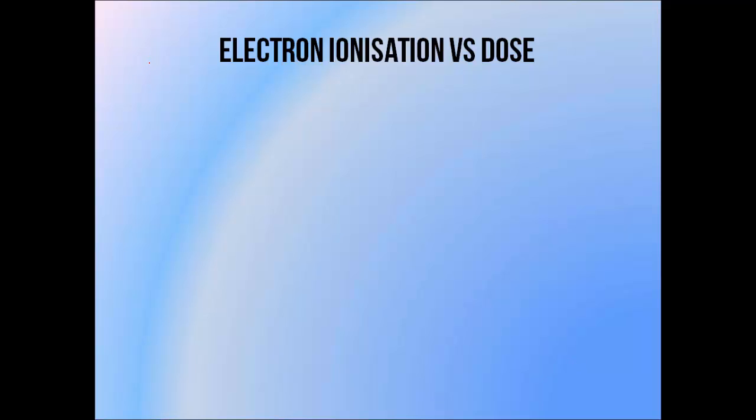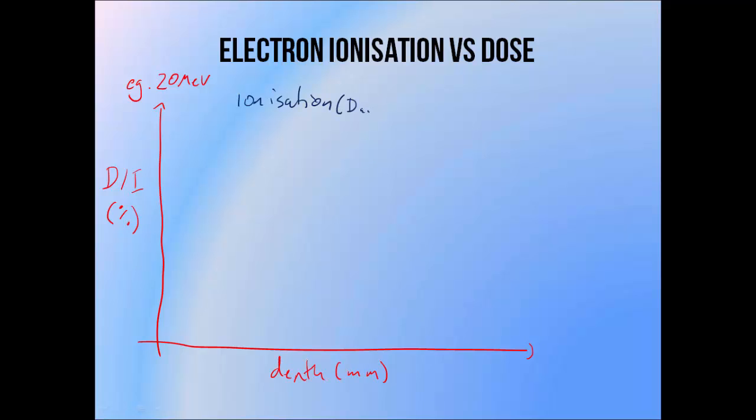Let's look at how the shape of depth ionization curves, or percentage depth dose-to-air curves, differ from typical PDD curves, or percentage depth dose-to-water curves. We'll use a 20 MeV PDD shape as an example. Depth ionization curves have a very similar shape to percentage depth dose curves. The differences are quite subtle, but at the surface of this beam...